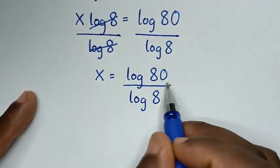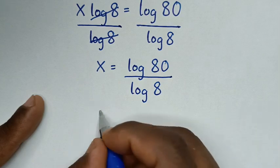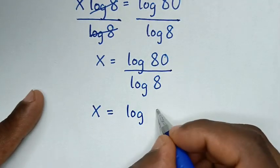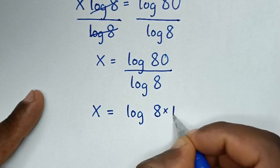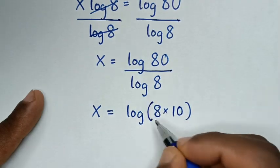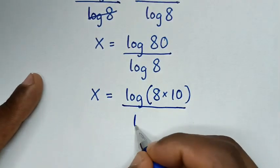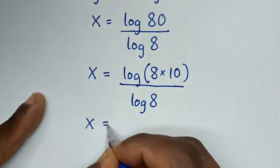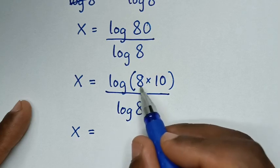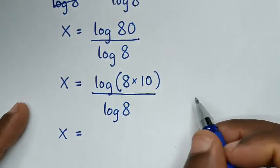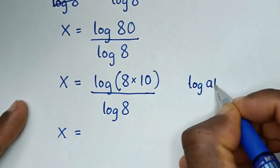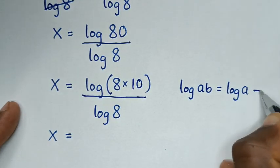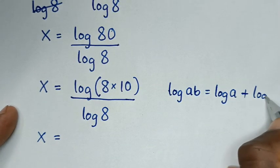Now this here is not in simplified form. So it will be x is equal to log of 8, where 8 is same as 8 times 10, then bracket over log of 8. So it will be x is equal to log of 8 times 10. This part here is in the form of log of a times b which is equal to log of a plus log of b.